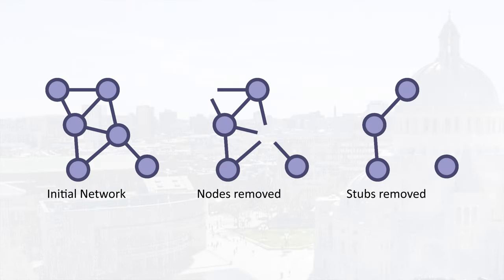Node removal is a bit more complicated, but we can make it easier by thinking about it as a two-step process. In the first step, we remove the nodes themselves, but that leaves the links they were attached to — we have these broken-off stubs of links. Then in the second step, we remove those stubs, cleaning up the network. In step one, we only remove the nodes themselves, so let's find out what that does to the degree distribution. For now, let's assume we remove nodes randomly, with R being the removed proportion and C the surviving proportion.